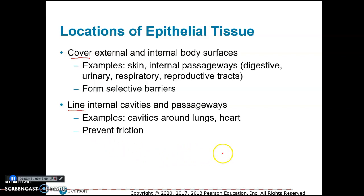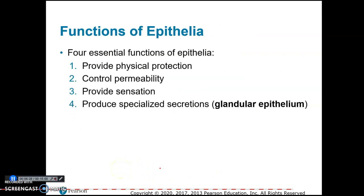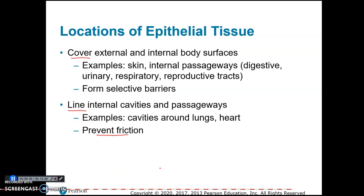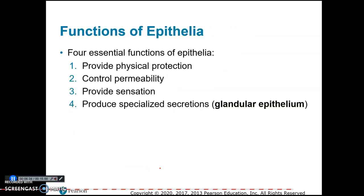For example, the cavities around the lungs and the heart are called the pleural cavity and the pericardial cavities. The purpose is to prevent friction because, as the lungs expand and the heart pumps blood, these linings prevent friction from those activities.